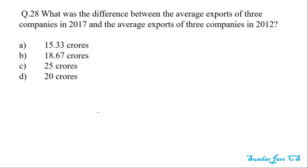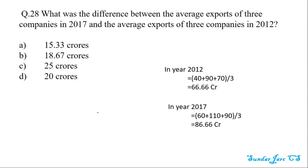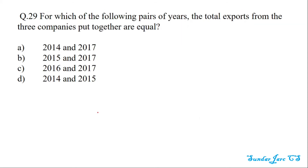For Q28: what was the difference between the average exports of the three companies in 2017 and the average exports of the three companies in 2012? In 2012, the average equals 40 plus 90 plus 70 divided by 3, equal to 66.66 crore. In 2017, the average export is 86.66 crore. So the difference is 20 crore, and the answer is 20 crores.